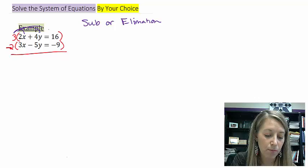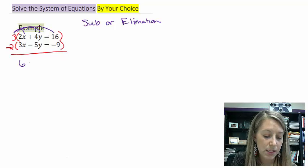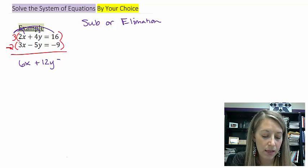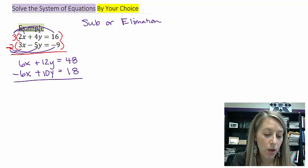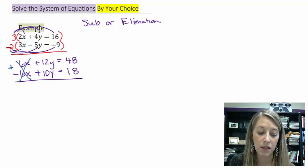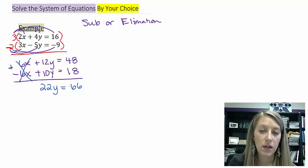Okay. Multiplying the first equation by 3, and remember, multiply every single part of it by 3. That gives me 6X plus 12Y is equal to 48. And in the bottom, when I multiply everything by negative 2, it gives me negative 6X plus 10Y is equal to positive 18. So when I add these two equations together, my X's eliminate themselves.